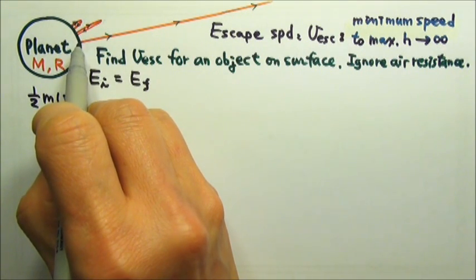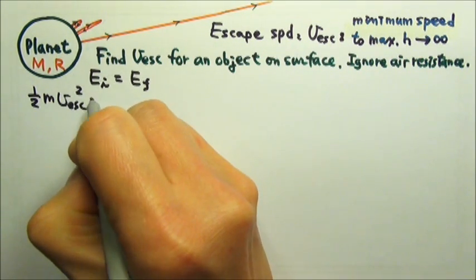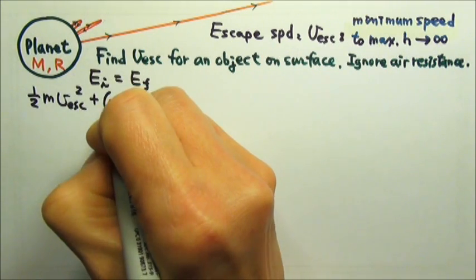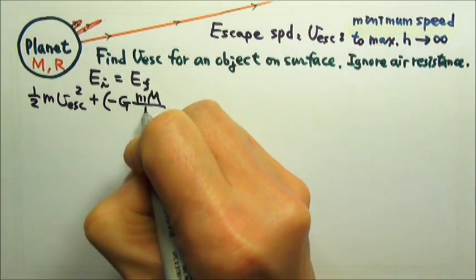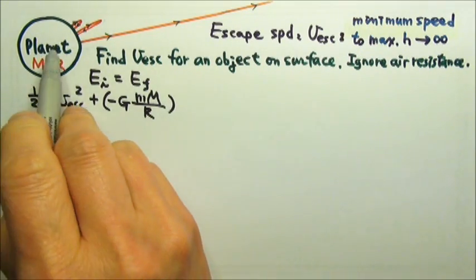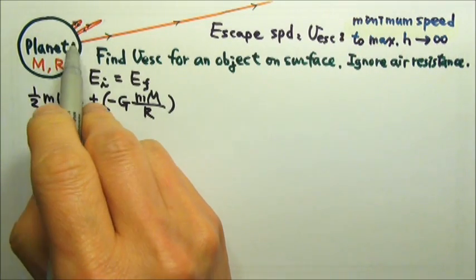On the surface of the planet, it has the gravitational potential energy that is the negative GMm over R. The R would be the big R, the radius of the planet.